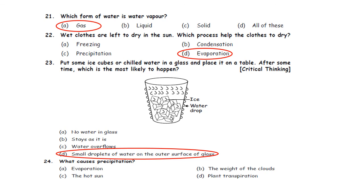Question 24: What causes precipitation? A. Evaporation. B. The weight of the clouds. C. The hot sun. D. Plant transpiration. The weight of the clouds causes precipitation. So option B is the correct answer.